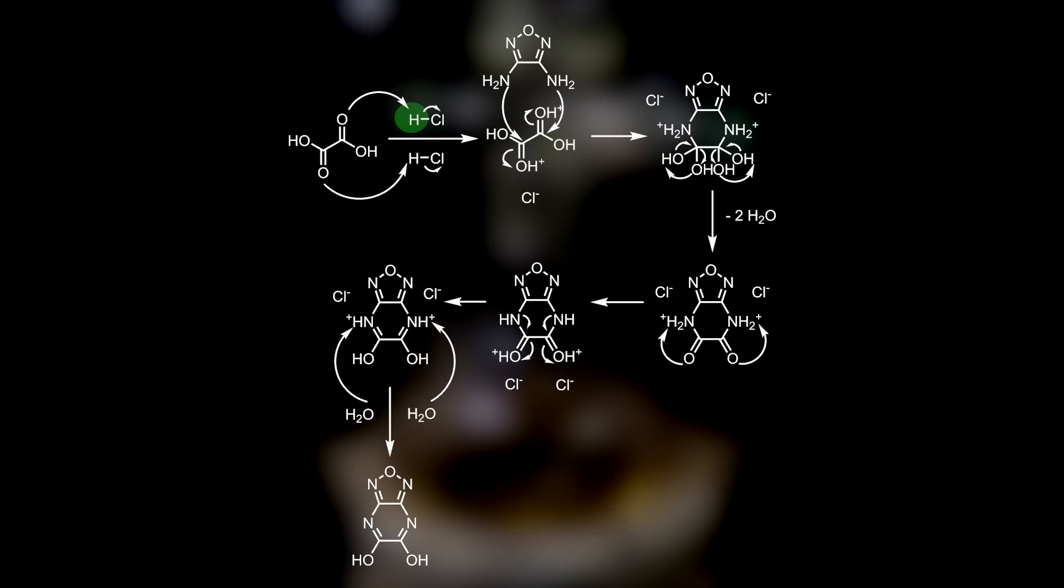Whether this happens at the same time or separately on each side is not really relevant for the reaction, but for the satisfying symmetry, I draw it as if both sides react at the same time. The protonated carbonyls are then attacked by the amines of the diaminofurozan, giving a tetrahydroxy compound.